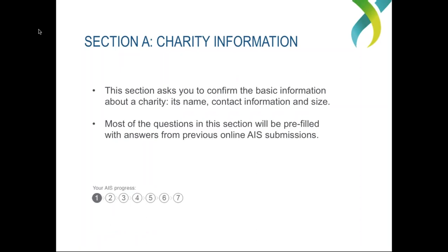Now we'll have a look at each section of the AIS. First is Section A, Charity Information. This section is fairly straightforward — it asks you to confirm basic information about your charity: your name, contact information, and charity size. If you've completed previous AIS submissions online — your 2013, 2014 and 2015 AIS — a lot of these answers will be pre-populated in the form, making it quicker to complete. You can of course change those pre-filled answers if they're not up to date.